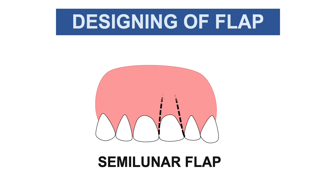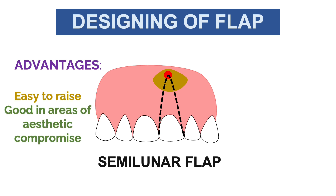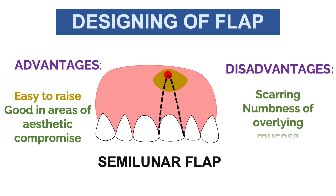The third flap design is the semilunar flap. As shown in the figure, we give an incision in a half-moon or semilunar shape, then raise the flap. This flap allows minimal exposure of the tissue. We use this flap in aesthetic areas to limit recession of the tissue — in triangular and trapezoidal flaps, gingival recession can be seen. Advantages: easy to raise and good in areas of aesthetic compromise.